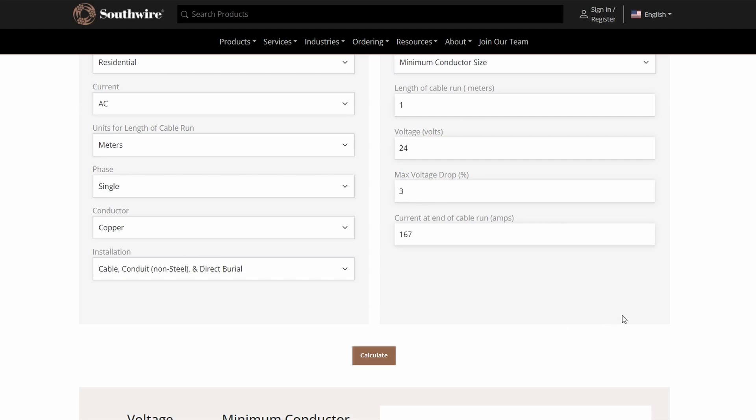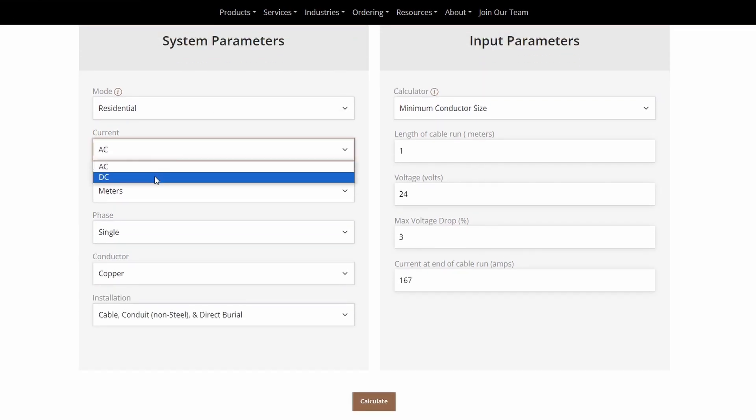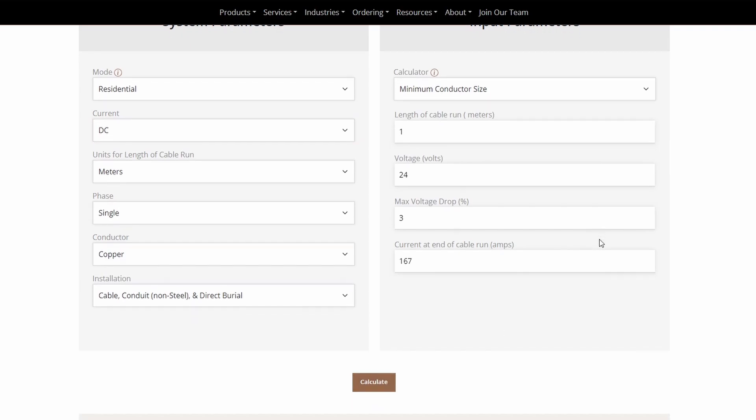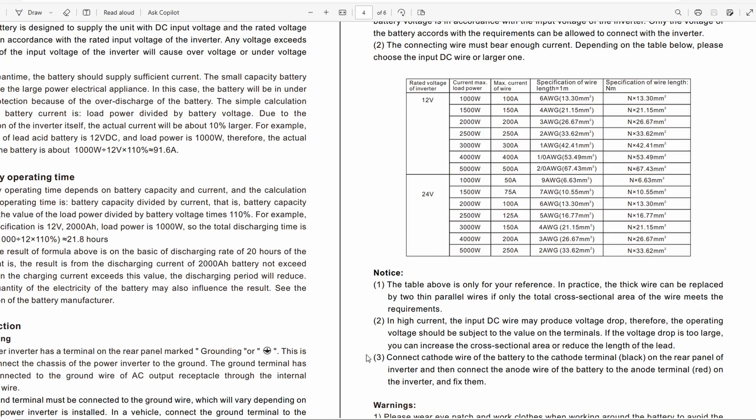If we were to go over and look at an actual wire size calculator, at southwire.com they've got a wire size calculator. I put in residential wire meters, single phase, one meter length, 24 volts, and we calculate that wire size. It recommends 2 ought wire. 2 ought wire depending on the temperature can handle between 150 and 175 amps. If we do the calculation for this inverter at 4000 watts at 24 volts, that's right around 167 amps. So ideally 2 ought wire is what you should be using here.